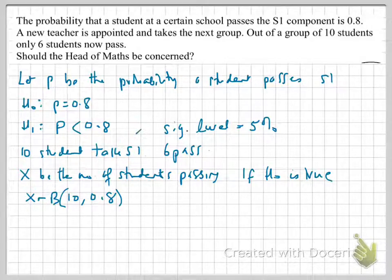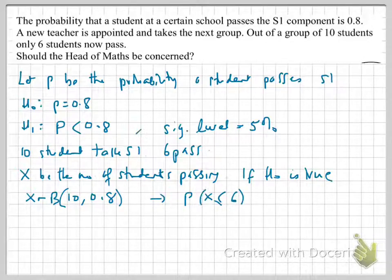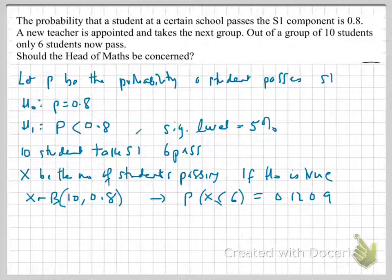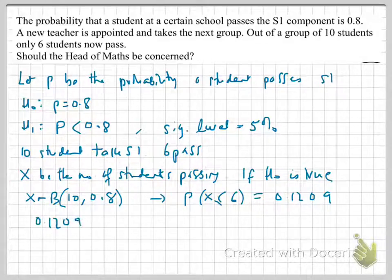And so, therefore, the probability that we've got 6 passes can be looked at as x is less than or equal to 6, which from our tables is 0.1209. And again, we'll take on the values 5, 4, 3, 2, 1, because obviously if those number of students passed, we're still asking the question whether the head of maths should be concerned. Okay, so, we'll therefore include all our values because we're investigating all of them. And so, it turns out that obviously 0.1209, that probability is greater than 0.05, our 5% significance level.